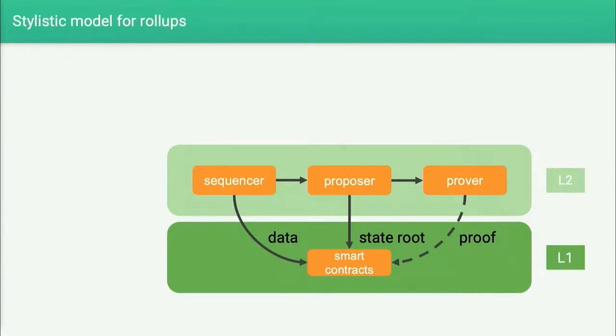The proof may be optional for optimistic rollups but is required for ZK rollups. And of course there is the set of smart contracts on L1.